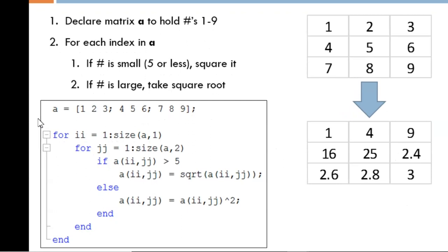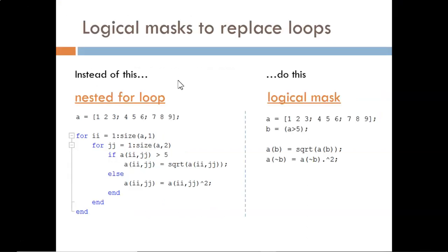The goals convert nicely into an if-else branch within a nested for loop. For every index in the matrix, if the value is large, then take the square root of that value. Else, if the number is small, square that value. But a nested for loop requires a great deal of repetition in order to evaluate each index individually.